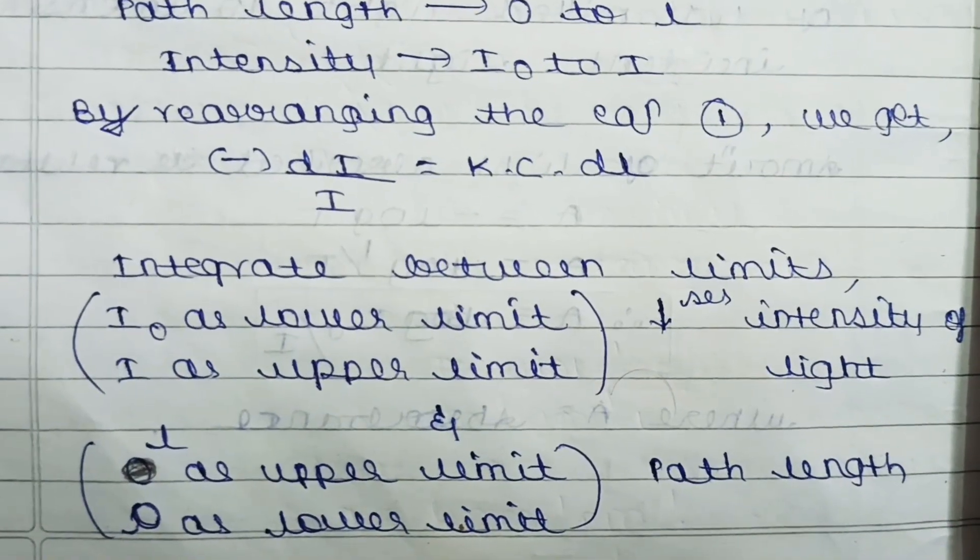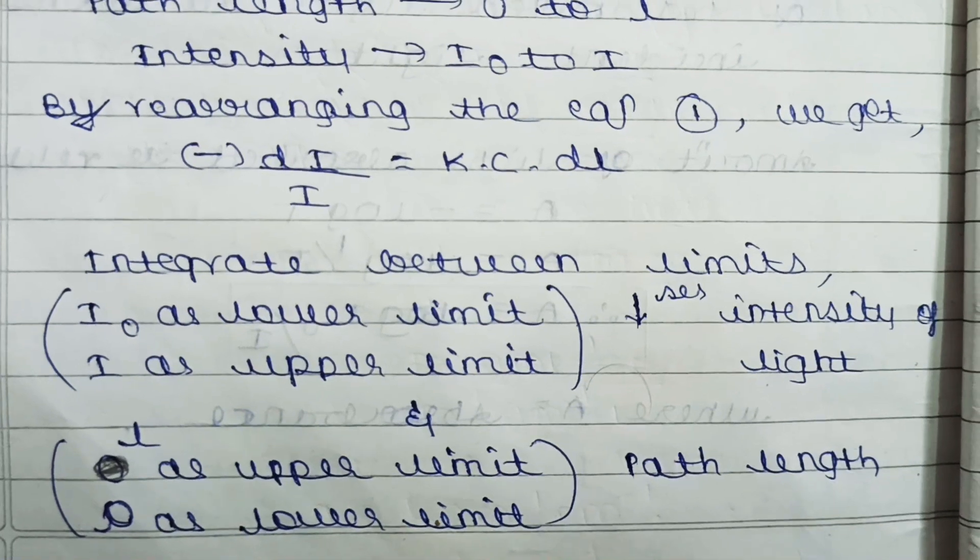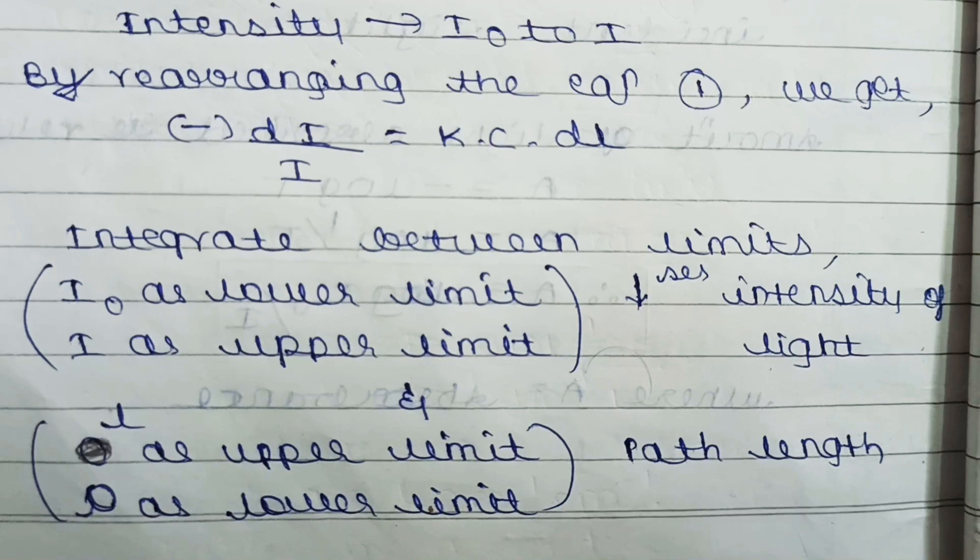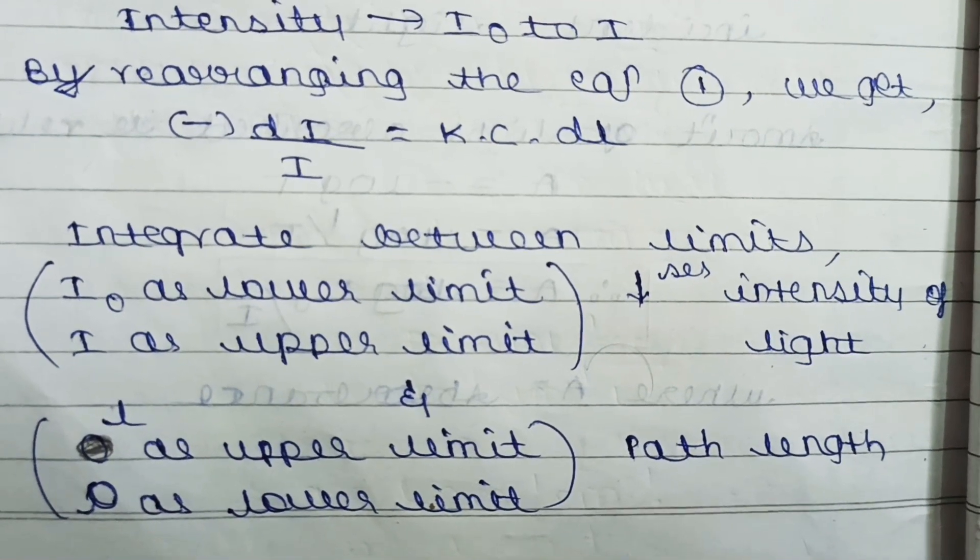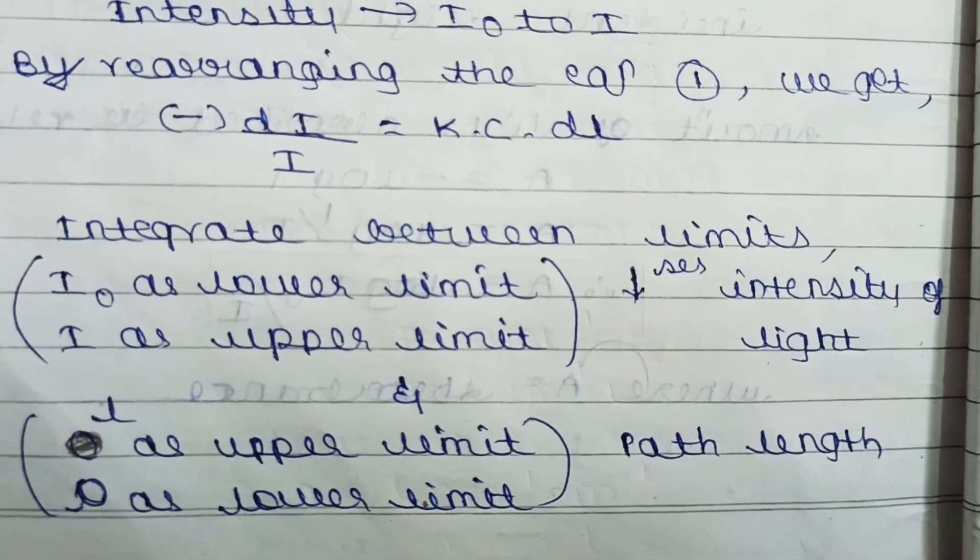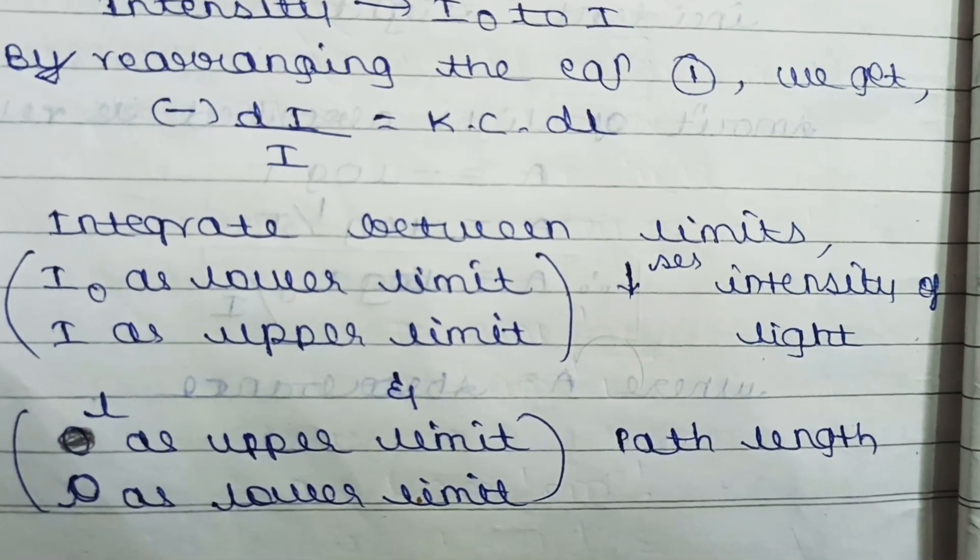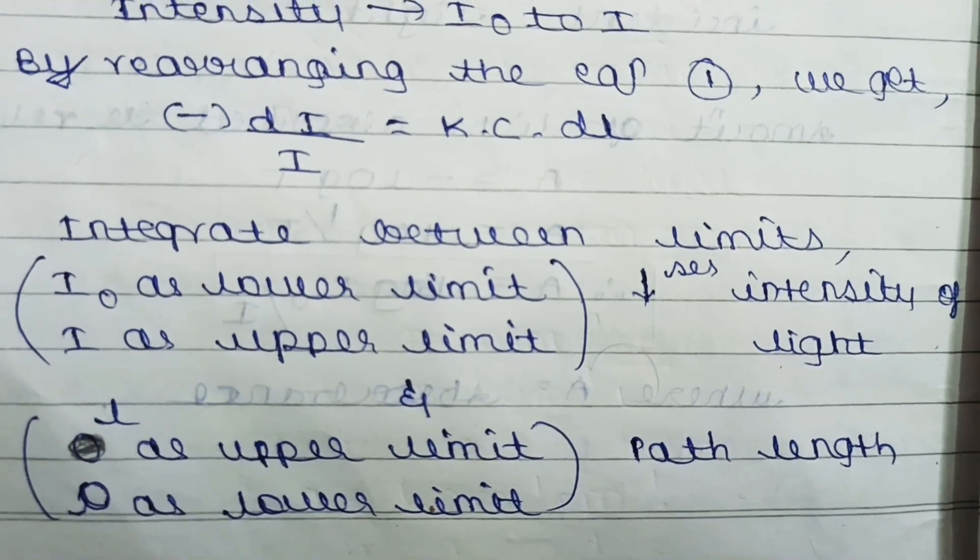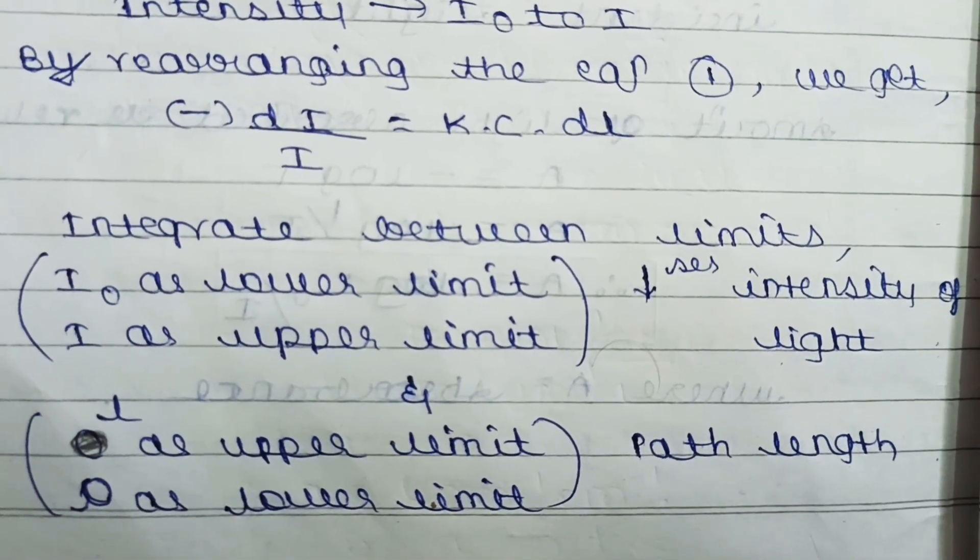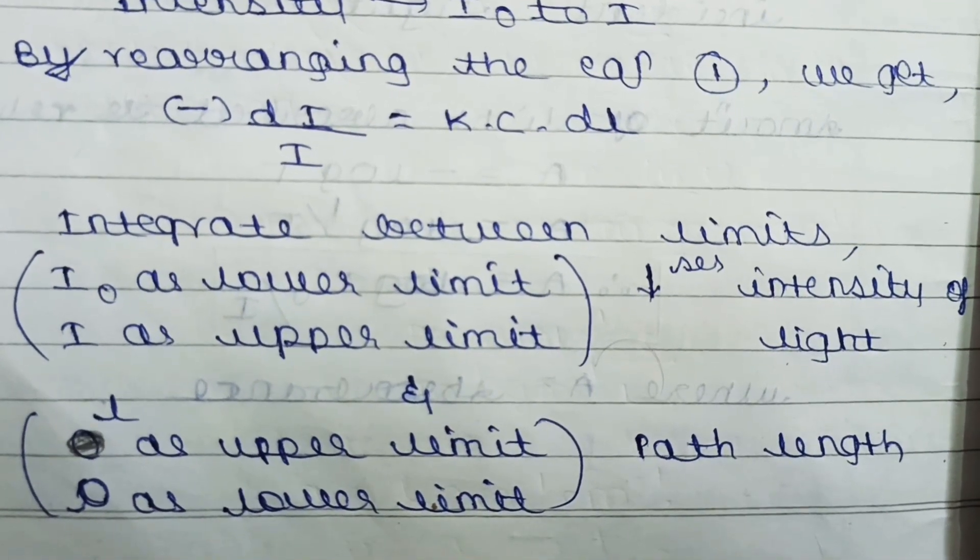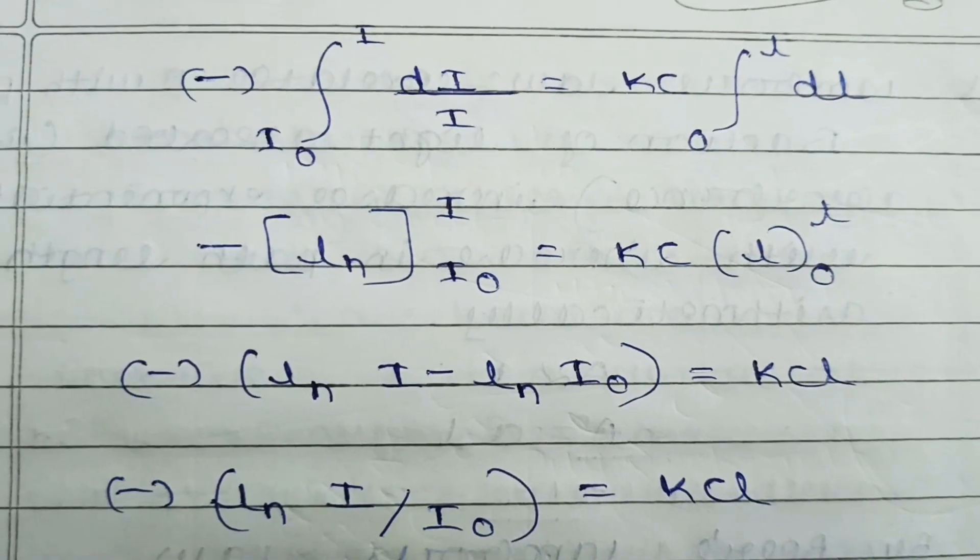Then integrate with the limits: I₀ as the lower limit and I as the upper limit. Because we take the starting as the lower limit and the transmitted as the upper limit. It causes the decrease in intensity of light. With respect to length, we take 0 as the lower limit and L as the upper limit.